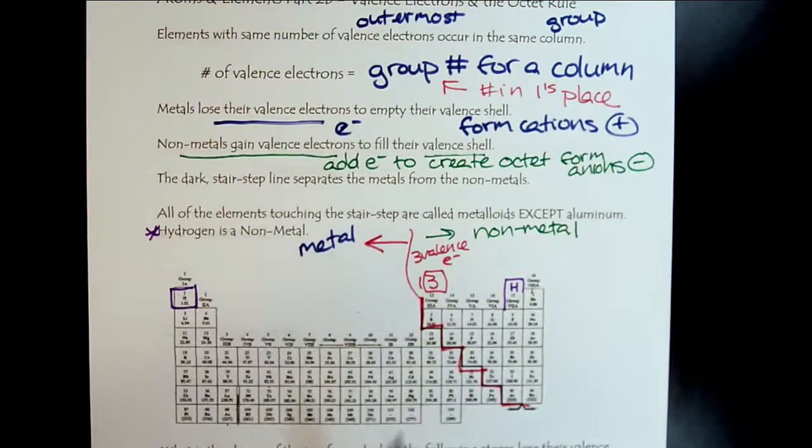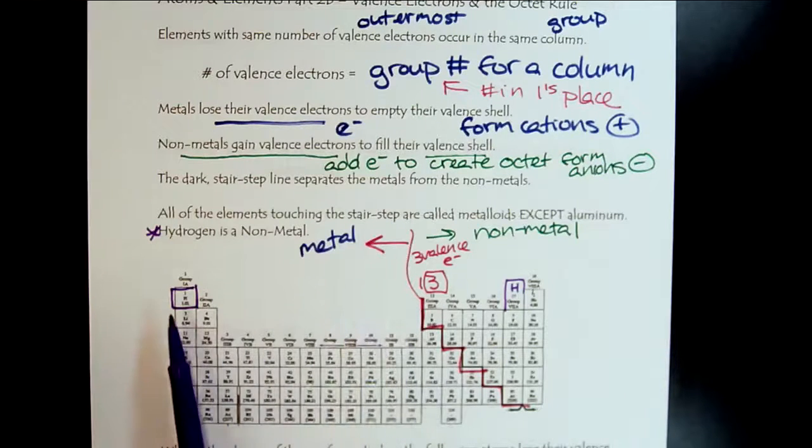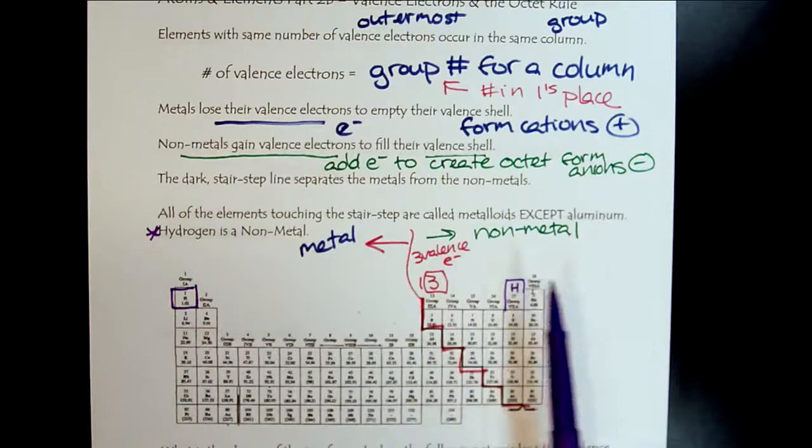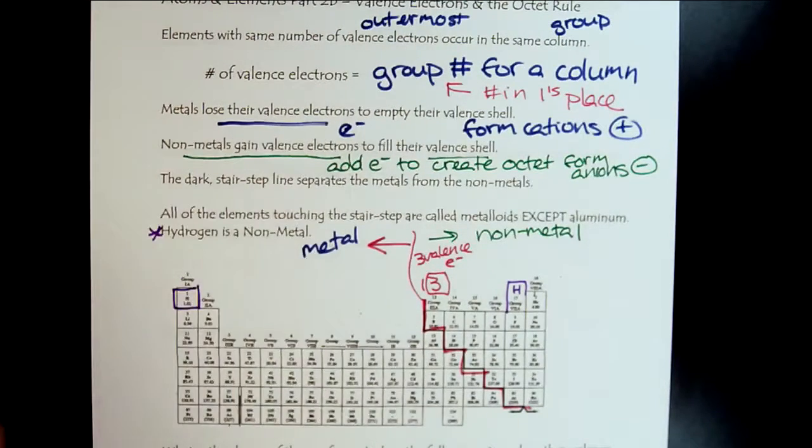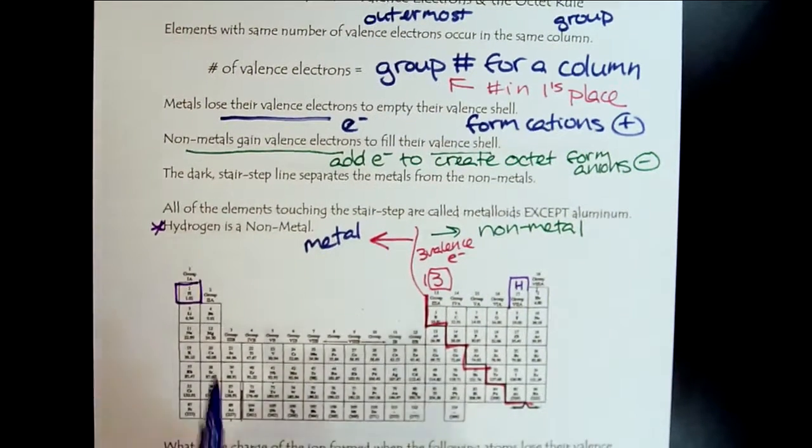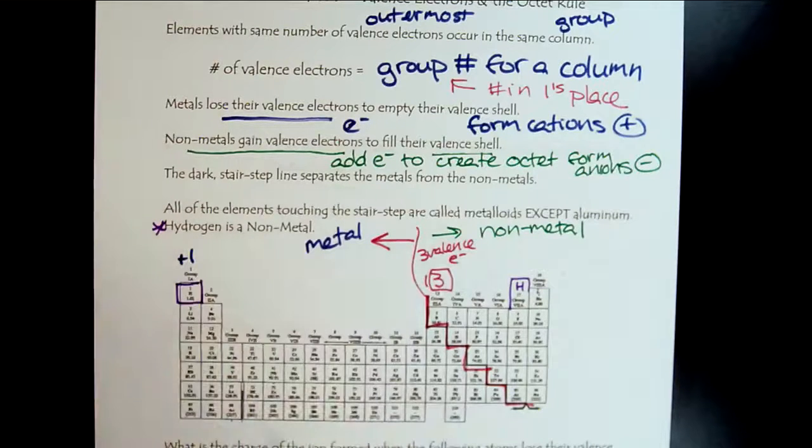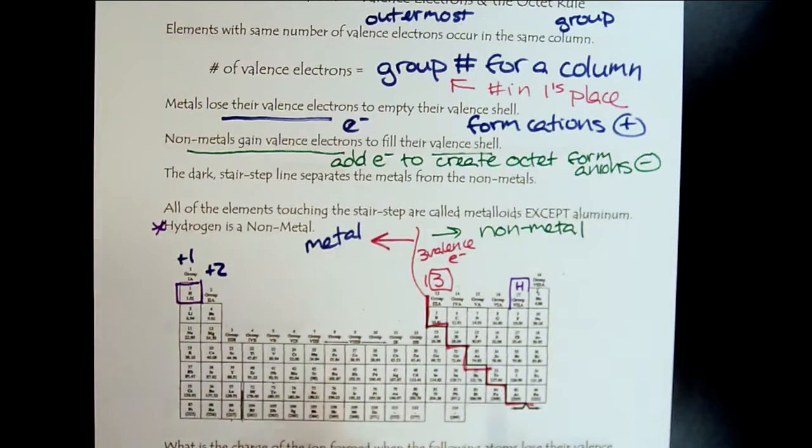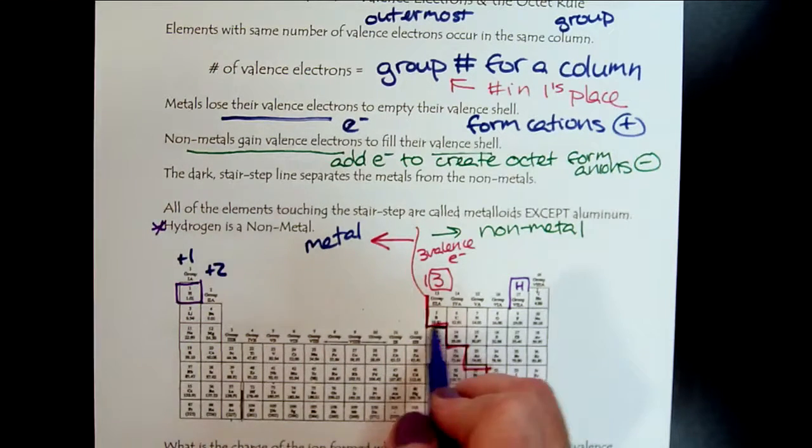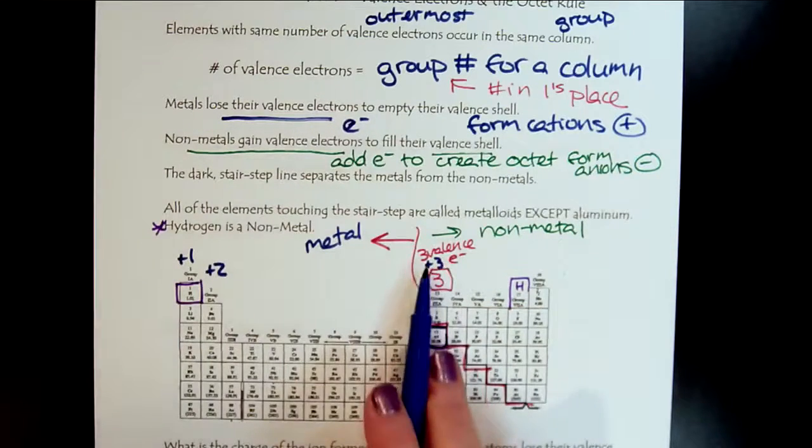Anytime we look at the periodic table, we see this stair-step line, and we recognize all the elements to the left are metals, and the elements to the right are nonmetals. Then we can take what we've learned. This is the alkali metals, plus one. Alkaline earth, plus two. There's our buddy aluminum, plus three. It loses those three valence electrons.